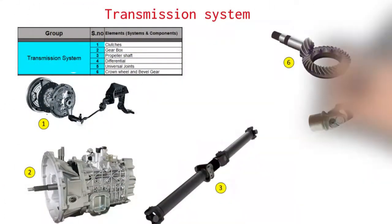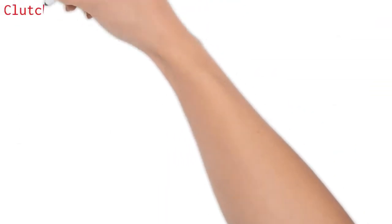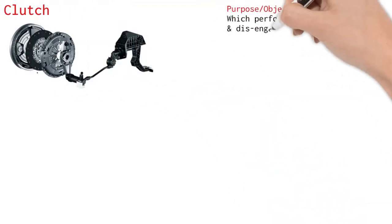Transmission system. Transmission system is used to carry power from engine to drive wheels. Parts of transmission are: Clutch, which performs work of engagement and disengagement between the engine and gearbox on the need basis.